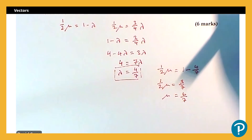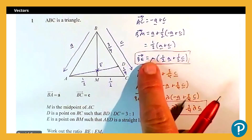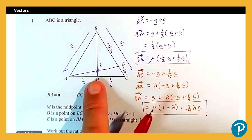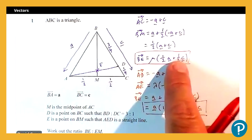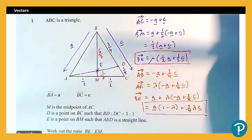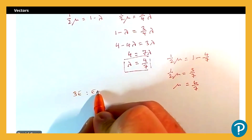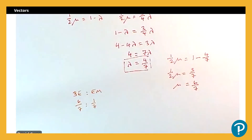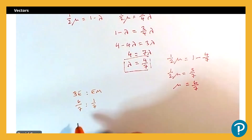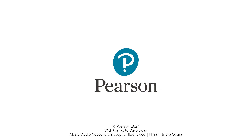Going back to our expressions: BE = μ × BM, so BE is 6/7 of BM. That means the remaining EM is 1/7 of BM. Therefore the ratio BE to EM is 6/7 to 1/7, which simplifies to 6 to 1. And there's our answer.